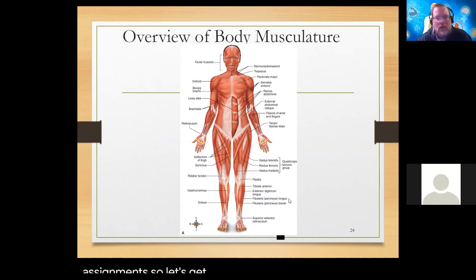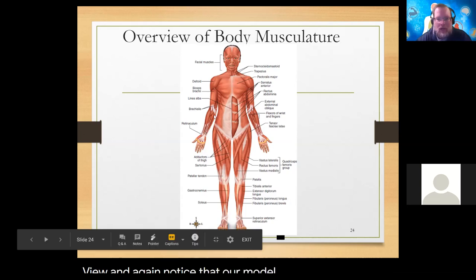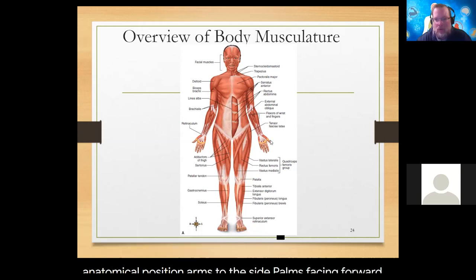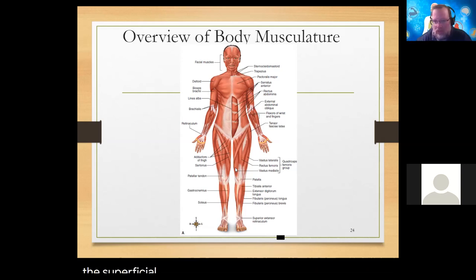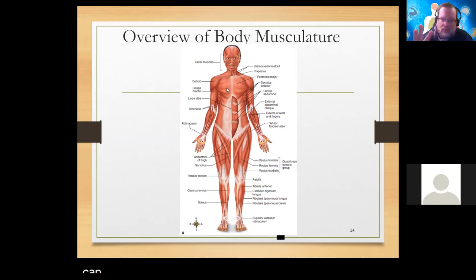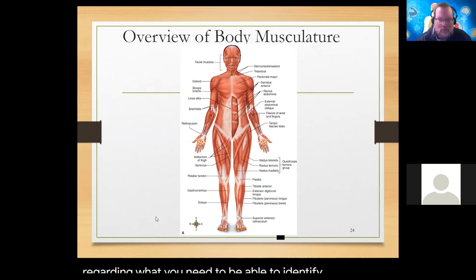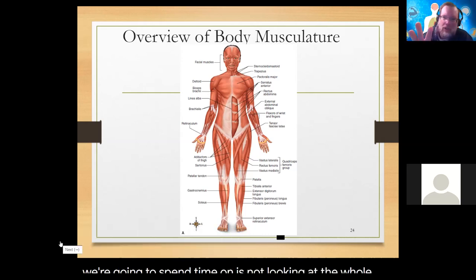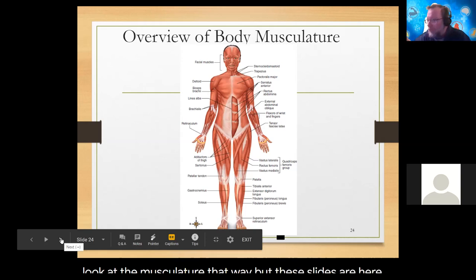We see an overview of these first couple slides of the anterior view. Notice that our model is in correct anatomical position: arms to the side, palms facing forward, thumbs out laterally. We're looking at the superficial muscles - you can see we've cut out a little bit of fascia so you can see the underlying musculature of the abdominal group. These are the superficial muscles of the anterior body.